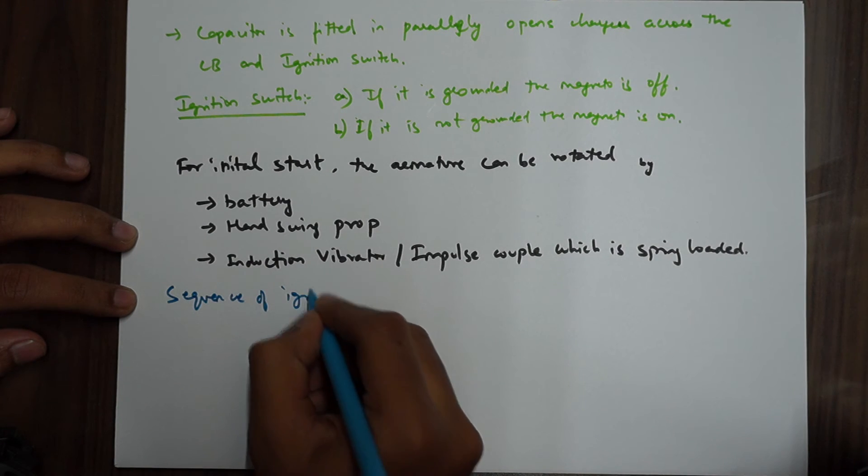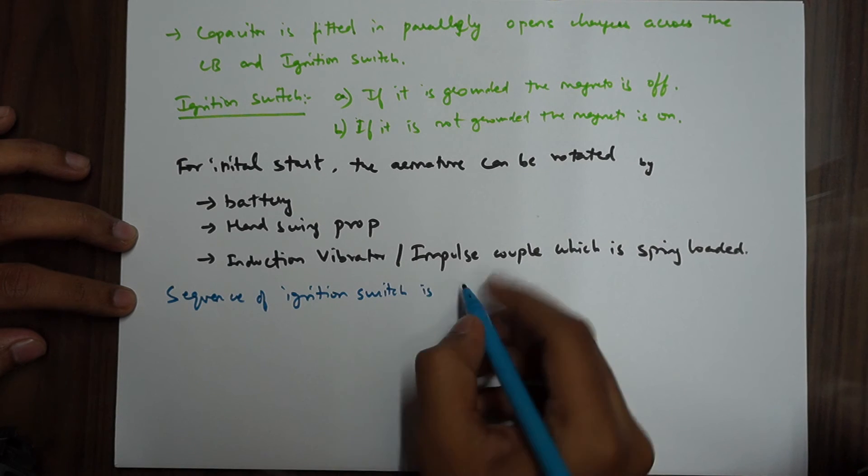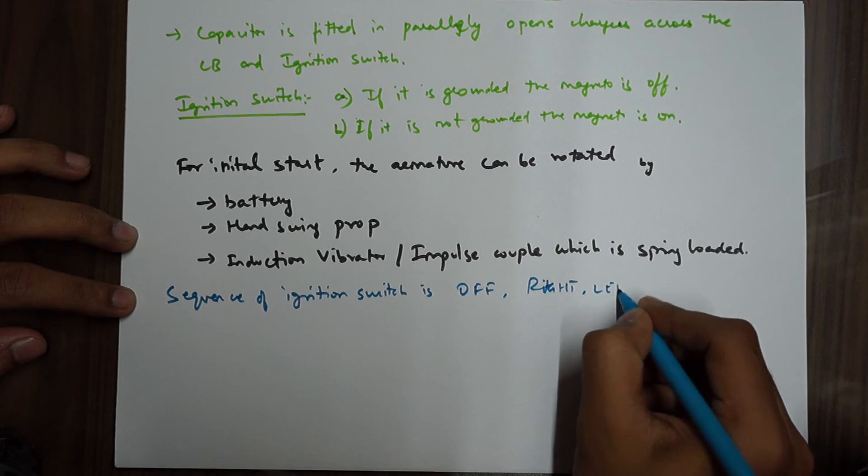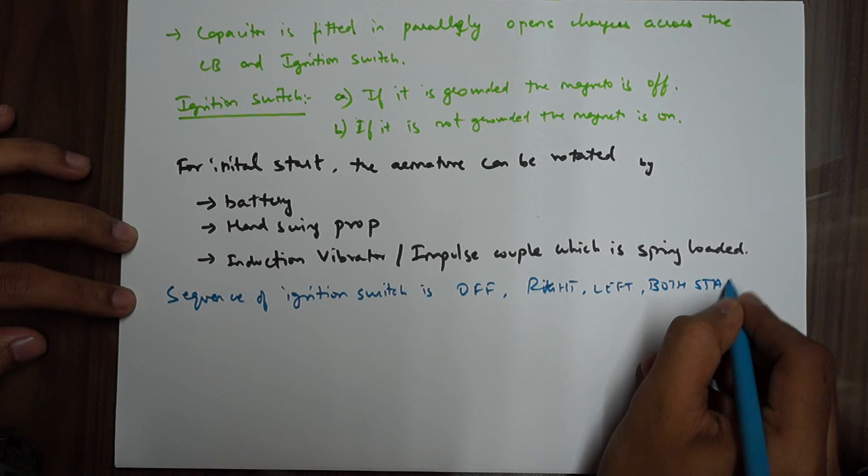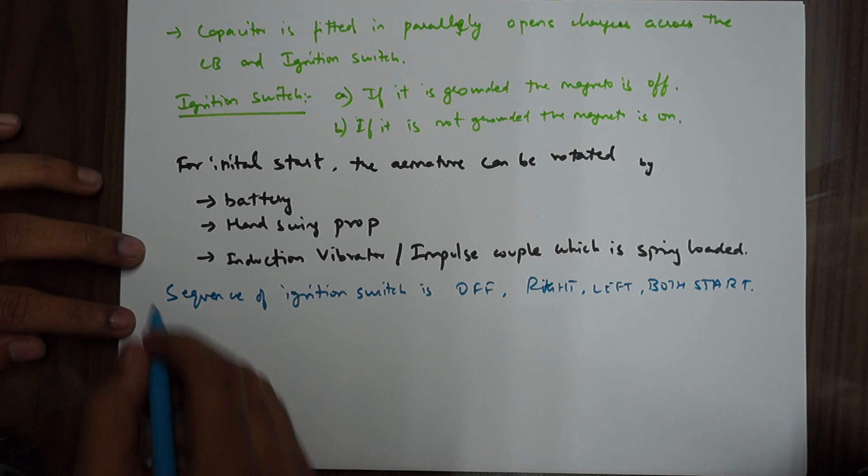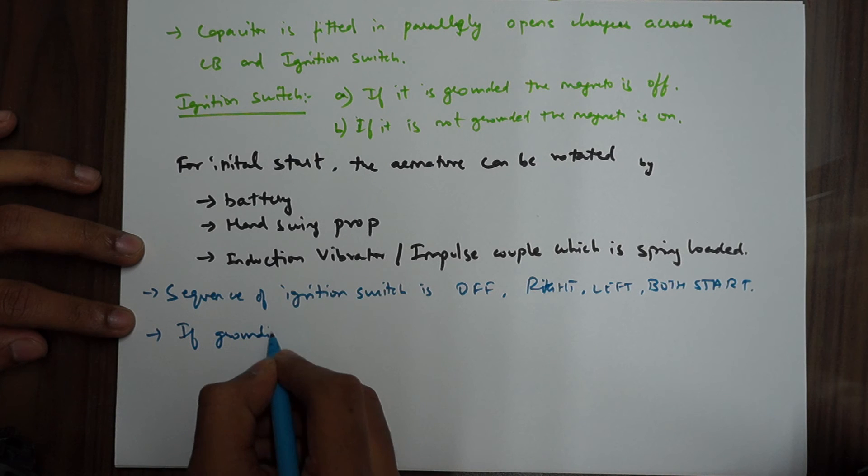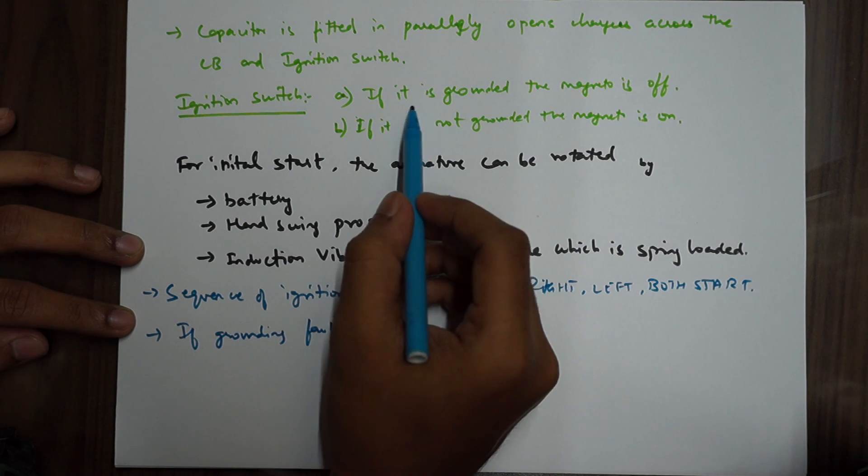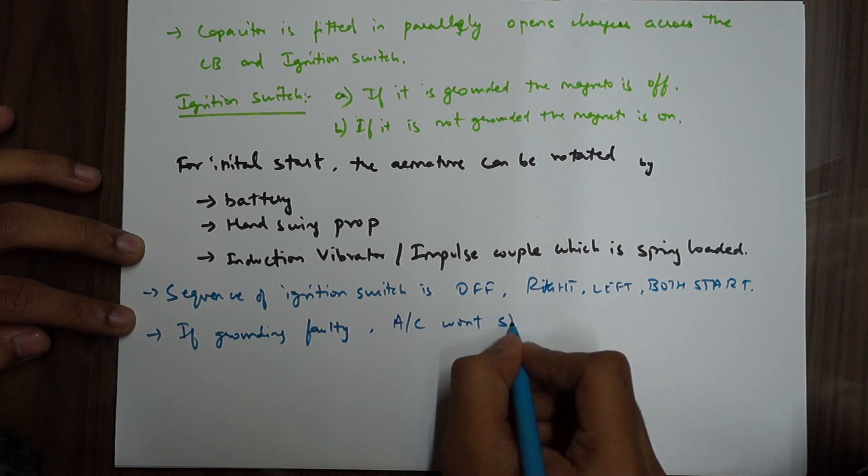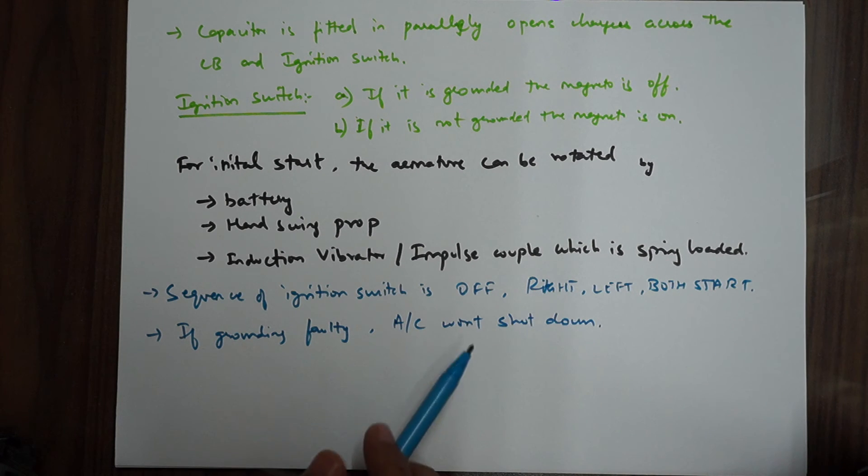Another important point: sequence of ignition switch is off, right, left, both, and start. And if the grounding is faulty of the aircraft, the aircraft won't shut down. If grounding is faulty, the aircraft won't shut down. That is basically till the fuel switch is cut or the fuel runs out, whichever depends on the aircraft type.